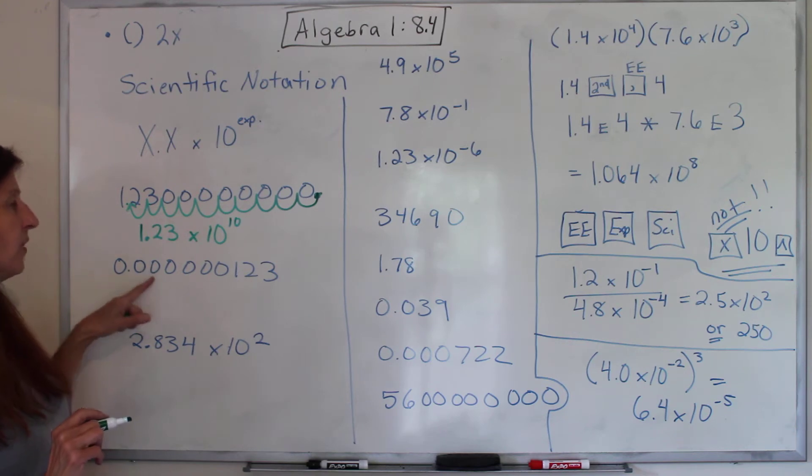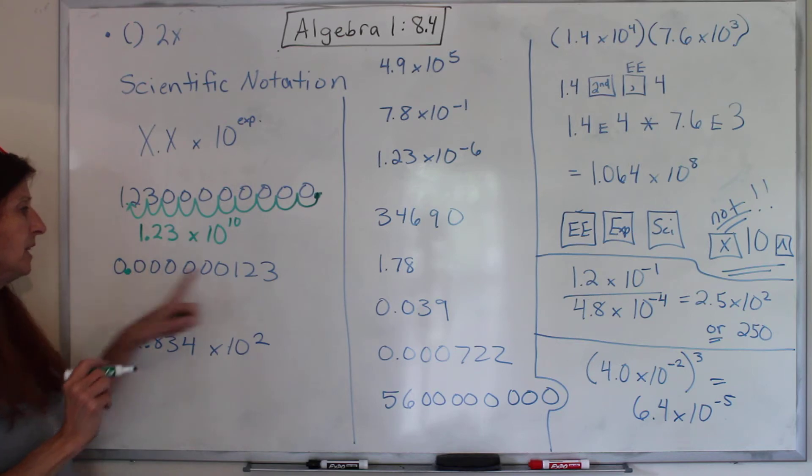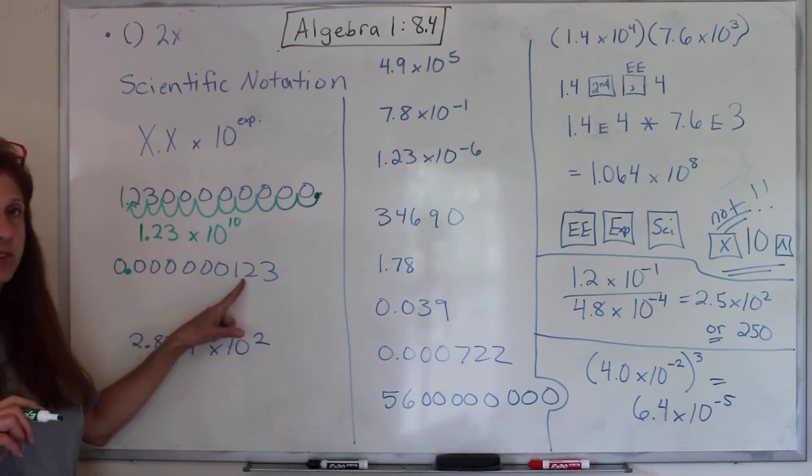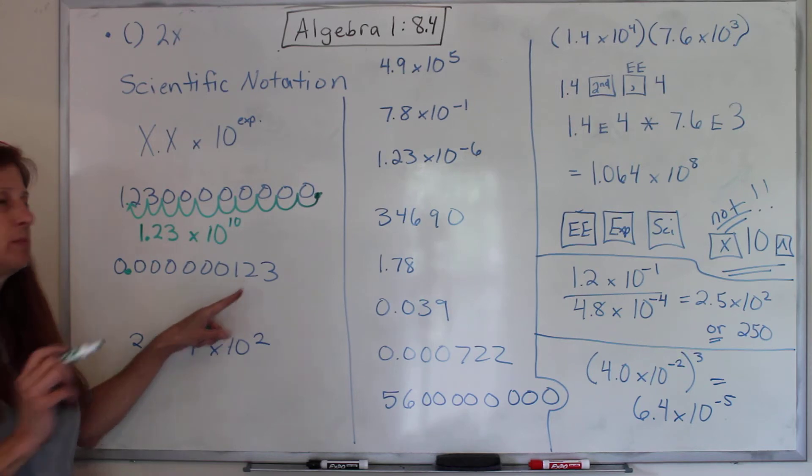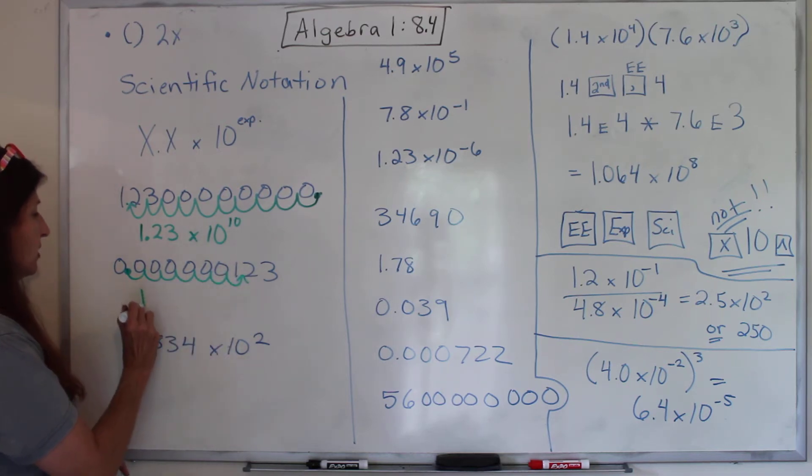Okay? So here's a very, very small number. Kermit is right here. He needs to hop to his place behind the first non-zero number, and we need to count how many times he hops. 1, 2, 3, 4, 5, 6, 7. So this is 1.23 times 10 to the 7th power.